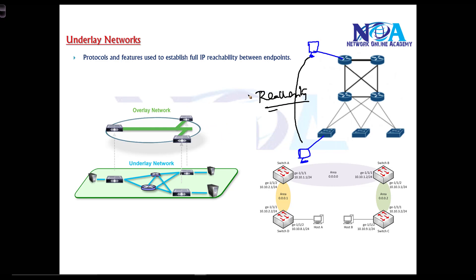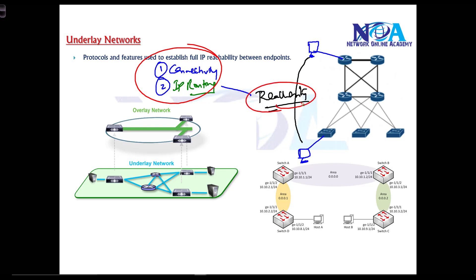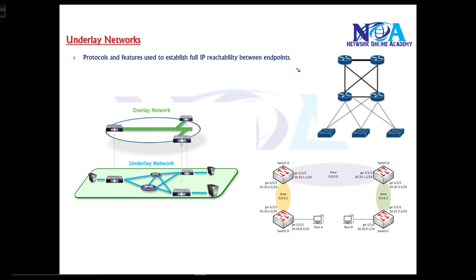To provide end-to-end reachability, first we establish physical connectivity using NIC cards or physical links connecting routers, switches, and other devices. Simply providing connectivity is not sufficient — we also need IP routing protocols running, such as EIGRP, OSPF, static routing, or any other protocol. Once both are done, we have IP reachability between the two endpoints, and a ping from one device should reach any other device in the network.